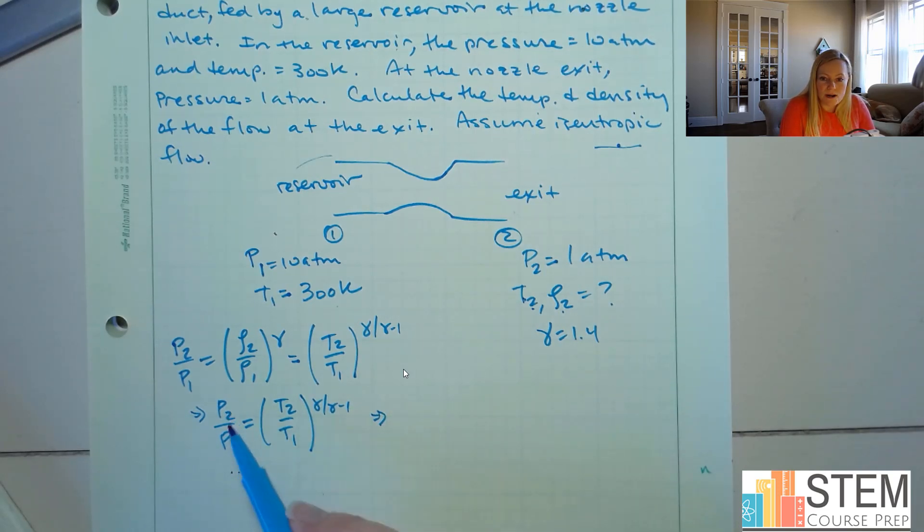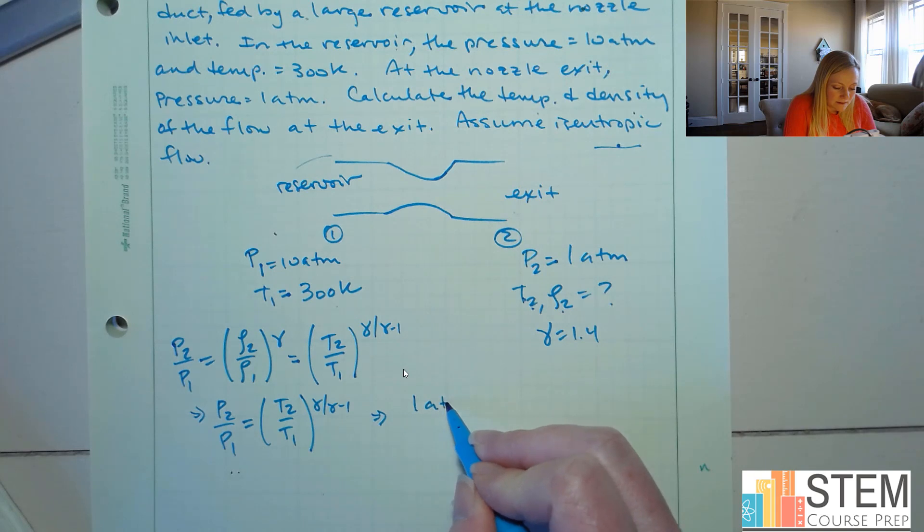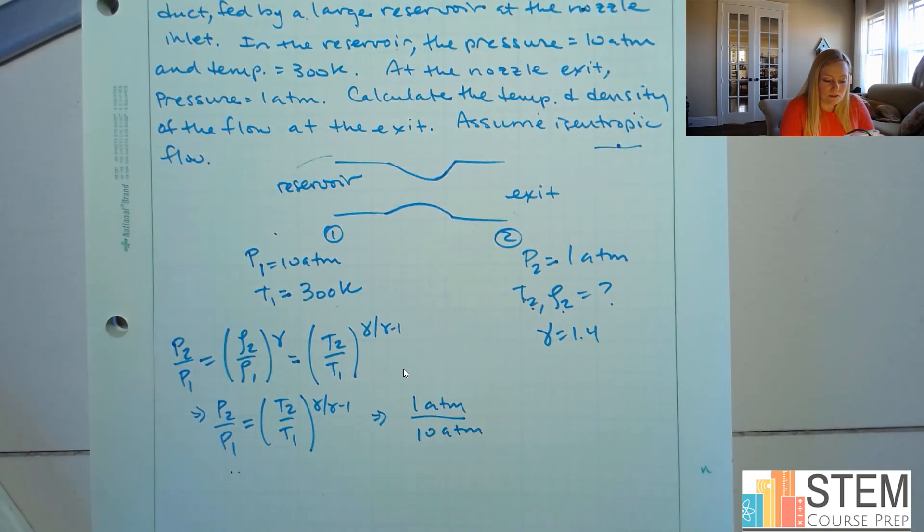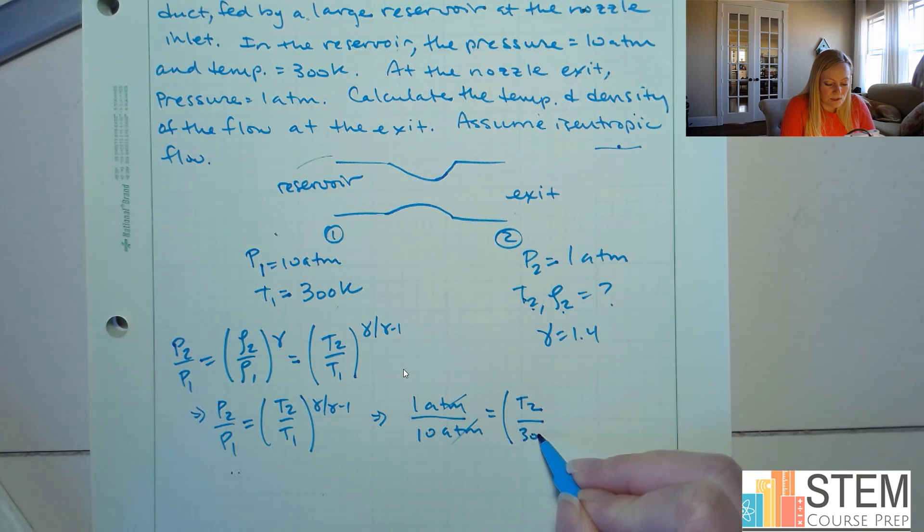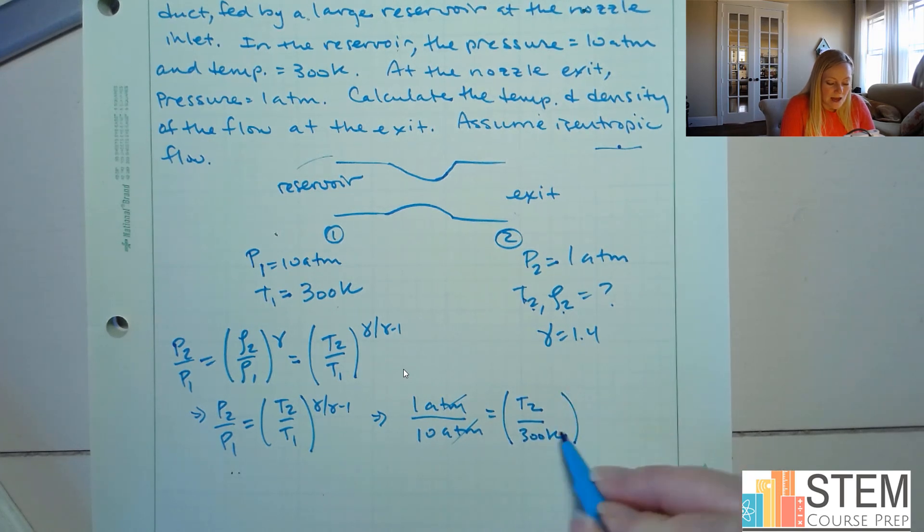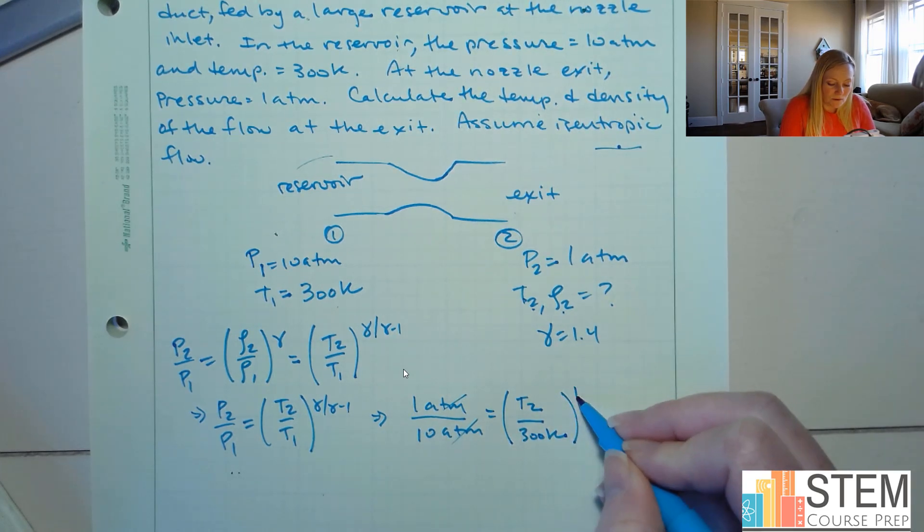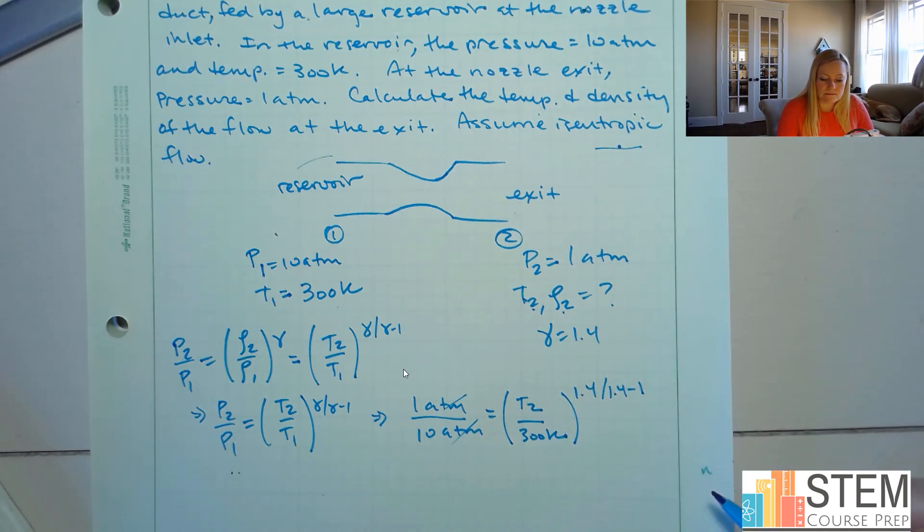So P2 is 1 atmosphere. P1 is 10 atmosphere. Notice those cancel. And then we're going to set that equal to this temperature. T2, I don't know what that is, so leave that as T2. Put it over T1, which is 300 Kelvin. And then gamma is 1.4. So we have 1.4 over 1.4 minus 1.